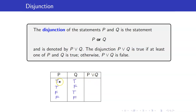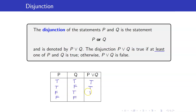On the first row, P and Q are both true, so P or Q is true because at least one is true — we have more than one, so that's even better. On the second row, P is true, so this is true. On the third row, Q is true, so this is also true. It will only be false when both are false.